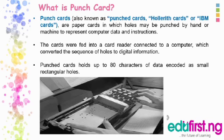Punch cards hold up to 80 characters of data encoded as small rectangular holes. For example, an early computer programmer would write a program by hand, then convert the program to a series of punch cards using a punch card machine. The programmer would then take the stack of cards to a computer and feed the cards into a card reader to input the program.